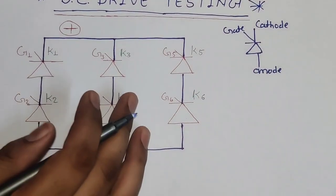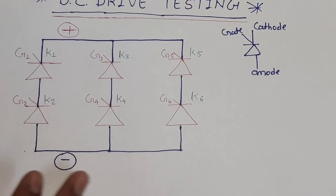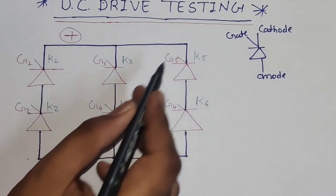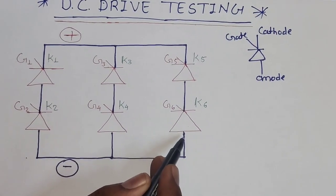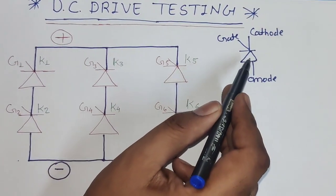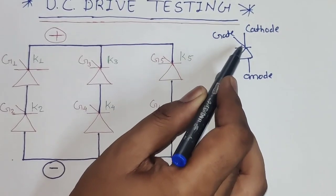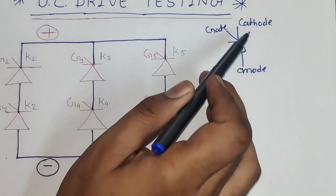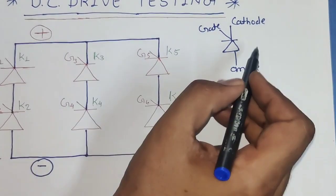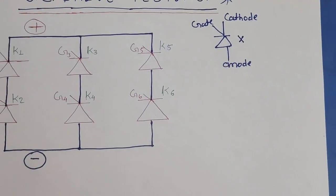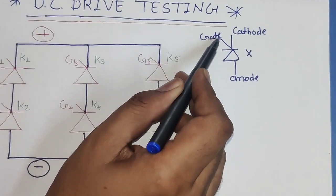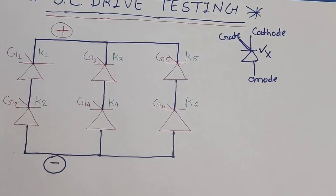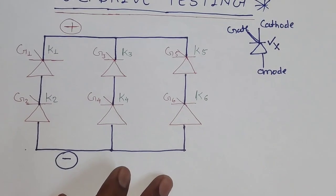First, let's look at some basic concepts of the DC drive. In a DC drive, we have a total of 6 SCRs: G1, G2, G3, G4, K5, and K6 — that means 6 SCRs total. In an SCR, there is a gate terminal, a cathode terminal, and an anode terminal. Normally, anode to cathode, no conduction will happen. If gate pulses come, then anode-to-cathode conduction will start. This is the basic concept of an SCR.